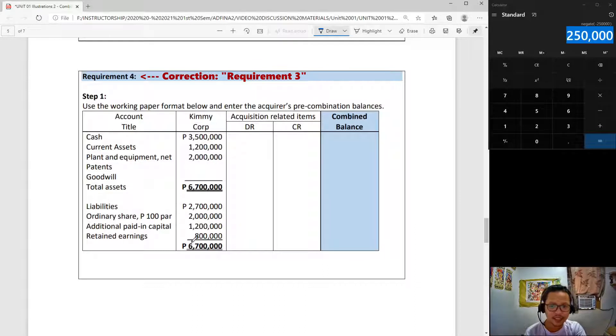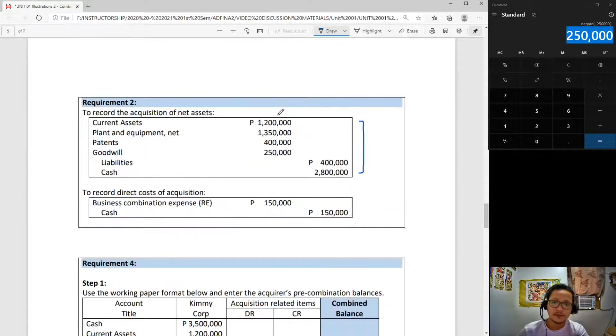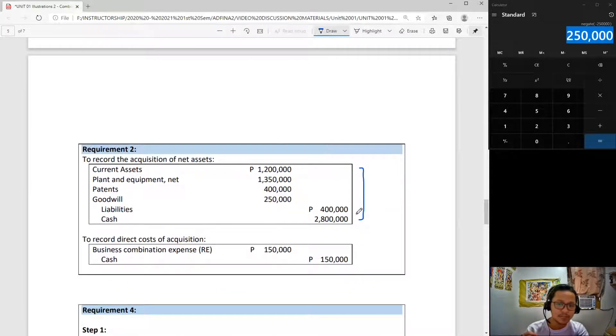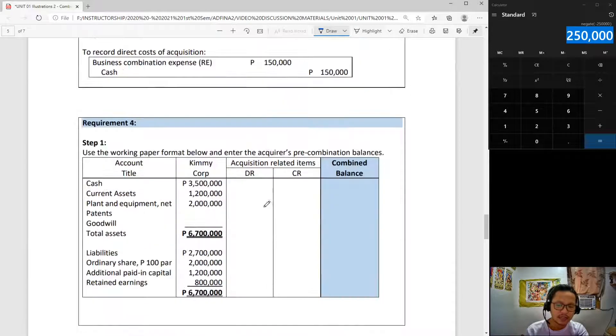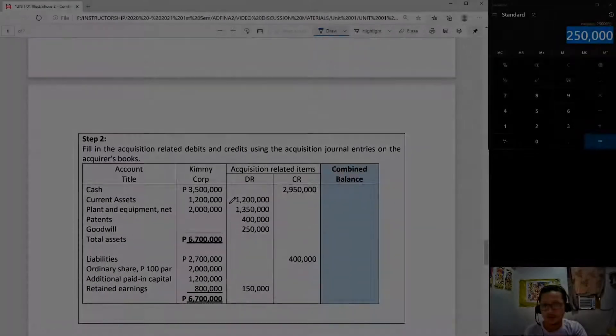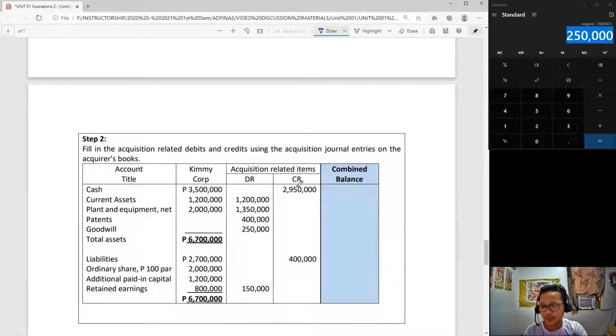Post all the balances of Kimi before acquisition. I provided two columns for debits and credits to acquisition related items. This is your acquisition cost, this is your FINA, this is your business combination expense - we need to post all of that. In short, you will only have to record all of these entries into the debits and credits to be recorded in Kimi's books. After posting all of the debits and credits, your solution will look like this.